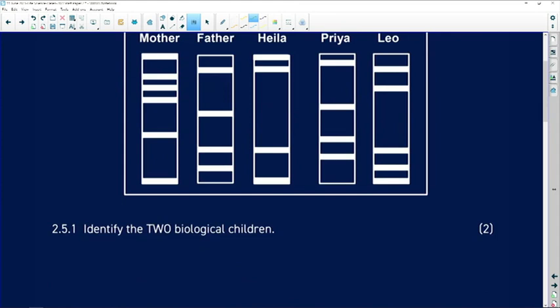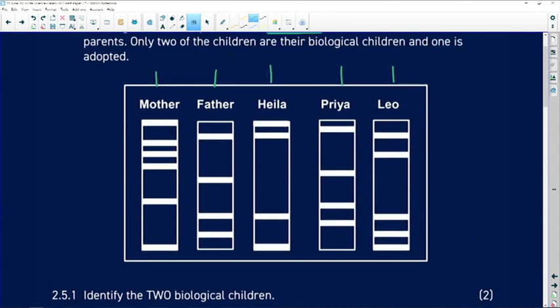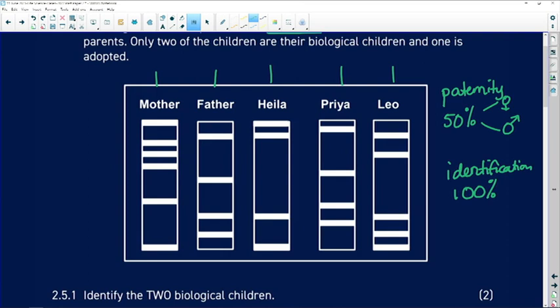Identify the two biological children. Now remember, when we're looking at the issue of paternity, 50% of the DNA is going to come from the mother and 50% from the father. When we're looking at straightforward identification, for example identification of a body, we expect to see a 100% match, but with paternity we're only looking for a 50% match.